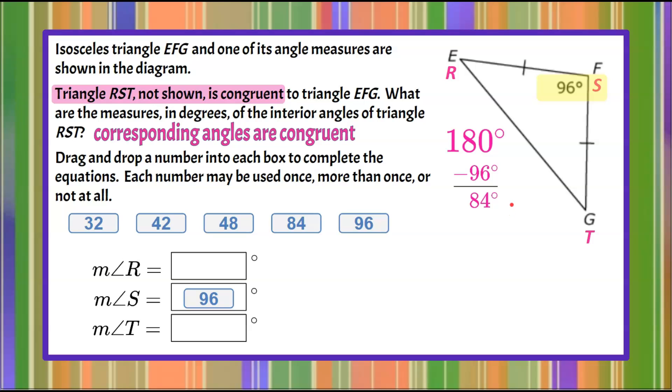So if they are equal, if I divide 84 by 2, 84 divided by 2 is 42, then I know that angle R is 42 degrees and angle T is 42 degrees.